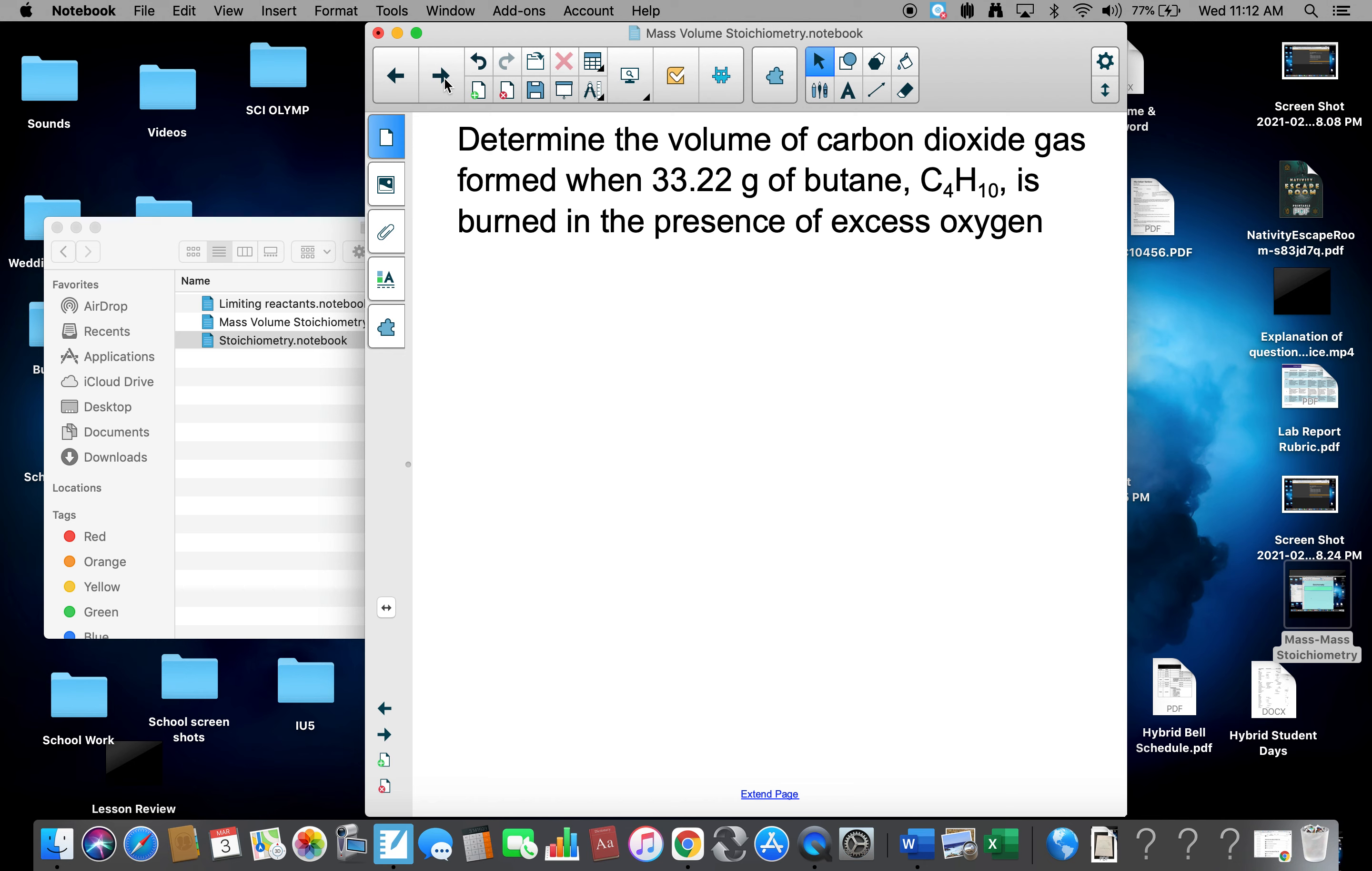Determine the volume of carbon dioxide gas formed when 33.22 grams of butane, C4H10, is burned in the presence of excess oxygen. Well, burn shows combustion. So there's our combustion reaction: C4H10 plus O2 yields CO2 plus H2O. Balance it up. We get 2C4H10 plus 13O2 gives me 8CO2 plus 10H2O.